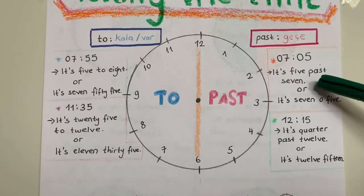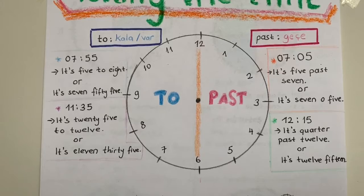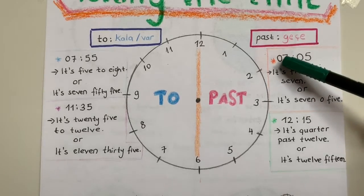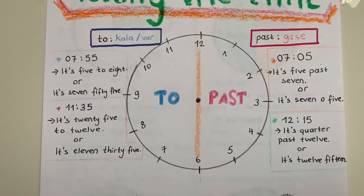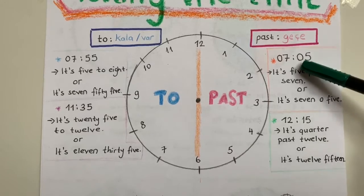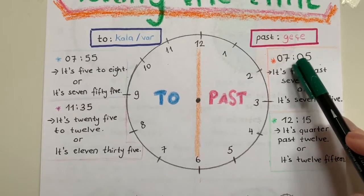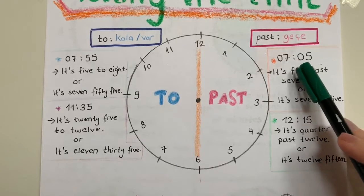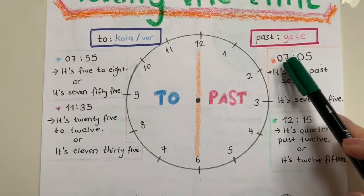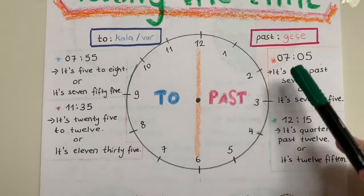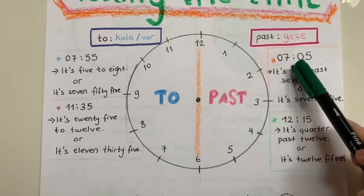Five past seven. Ya da dijital olarak söylememi istiyorsa, direkt gördüğüm sayıları okuyarak söyleyebilirim: seven oh five. Eğer sıfırlı bir şey ise burada, ondan daha küçük bir rakamsa, o zaman o şeklinde okuyabilirim sıfırı: seven oh five.